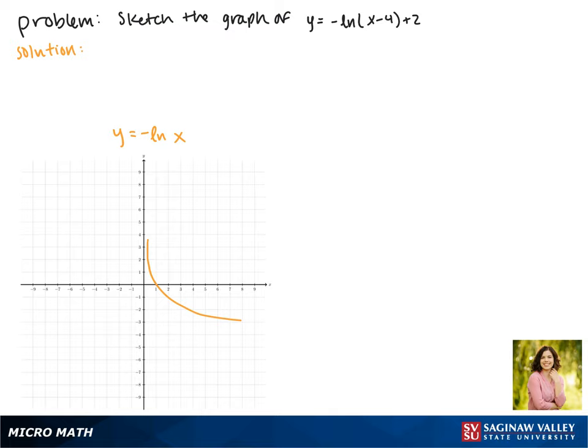There are no horizontal reflections, so now we'll move on to translations. Inside the logarithm we are subtracting 4 from x, which tells us to move it to the right four places.